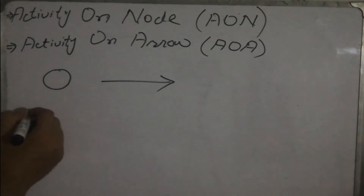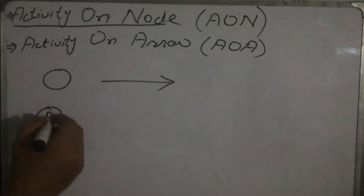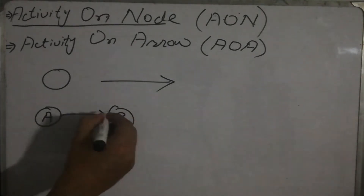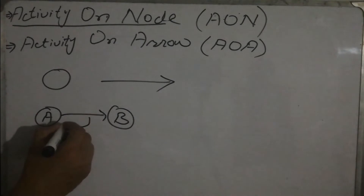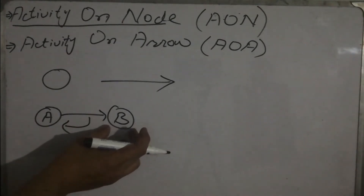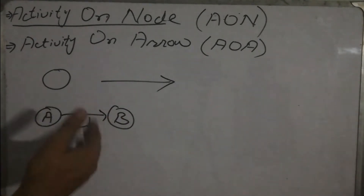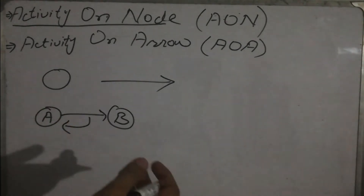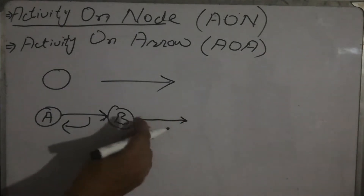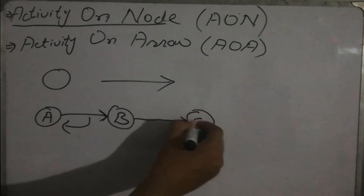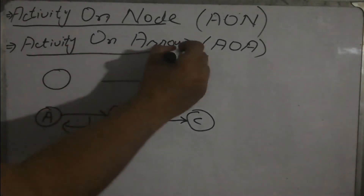In the Activity on Node technique, suppose we have activity A and then activity B. The node represents the activity, while the arrow represents the precedence — meaning B will only start when activity A has been completed. The node represents the start and end of the activity: where the arrow is attached, the activity has started, and the tail of the arrow represents that the activity has been completed.